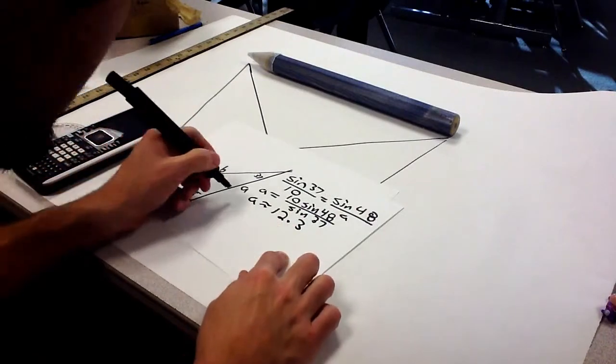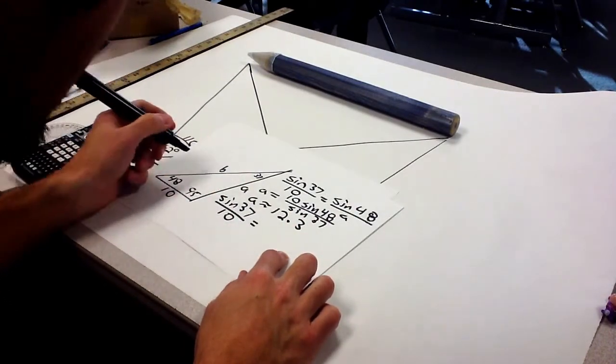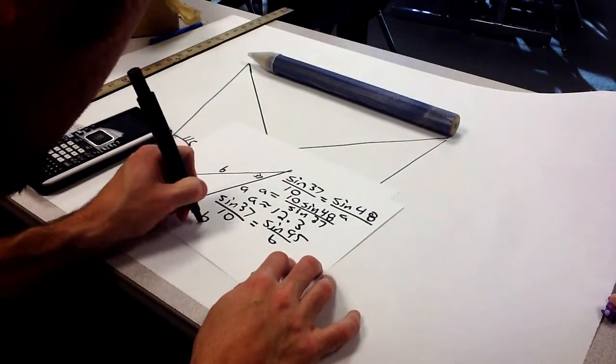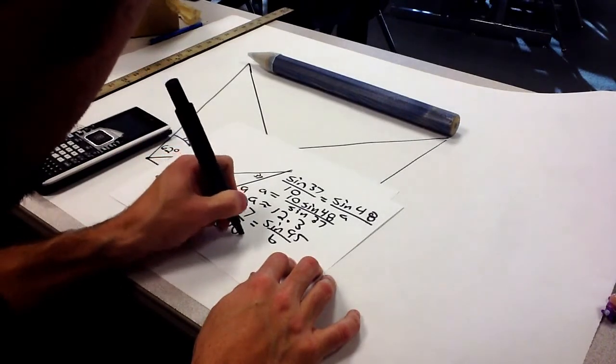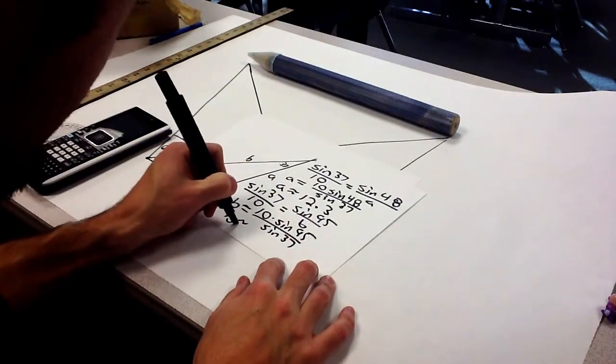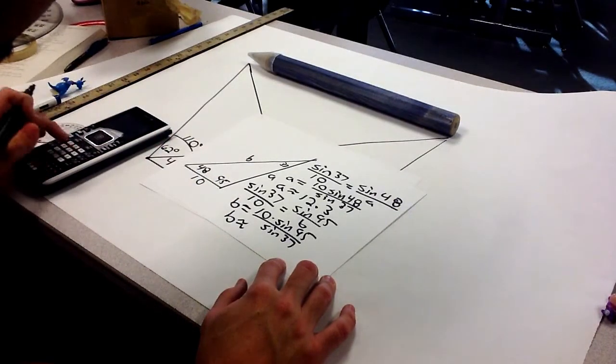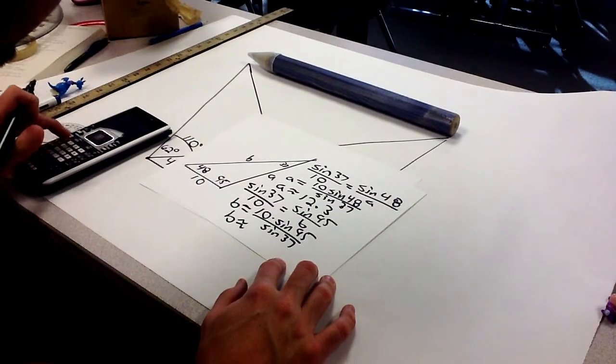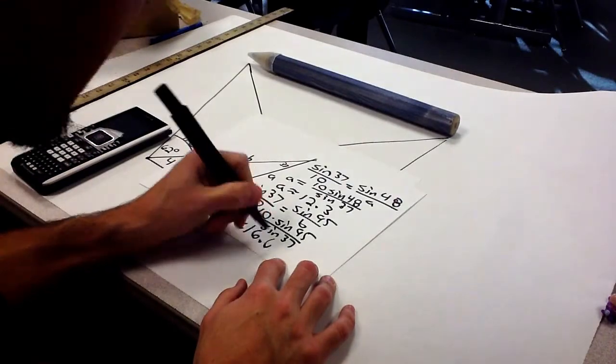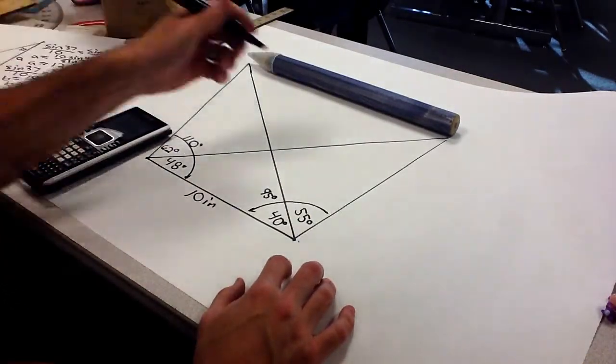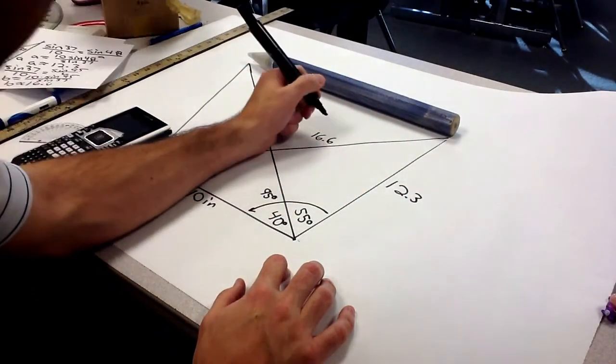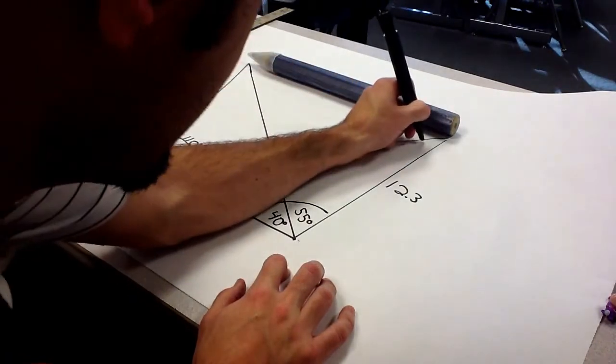Now, do the same thing for B. It's still going to be sine of 37 over 10 equals sine of 95 over B. So, B is going to be 10 times sine of 95 over sine of 37. We get that's about 16.6. So, let's go back and label here what we have. I have 12.3, 16.6, and we found that top angle to be 37 degrees.